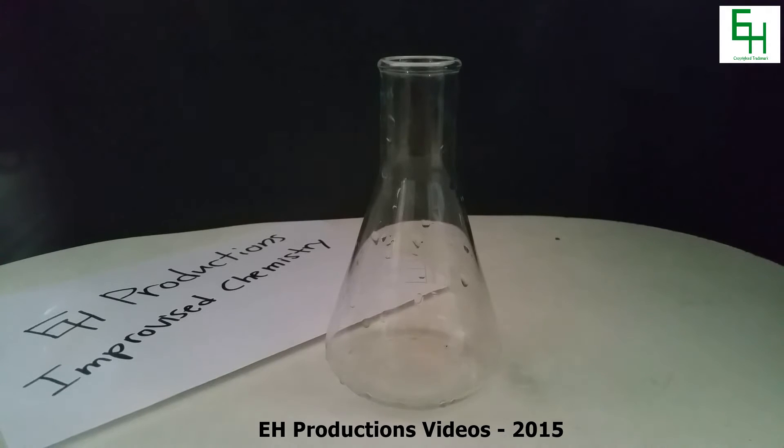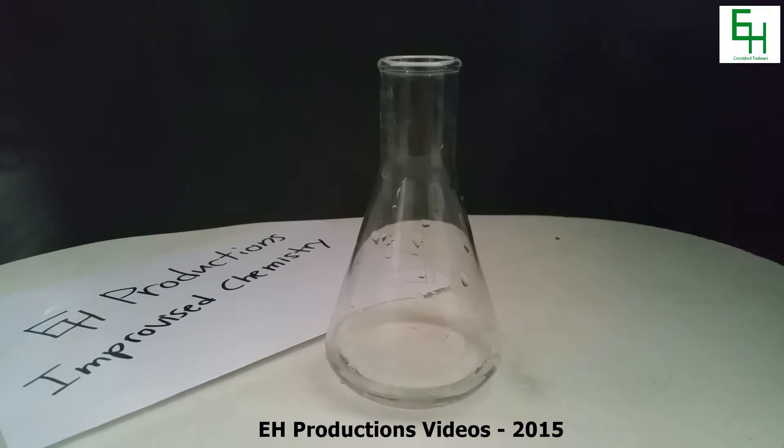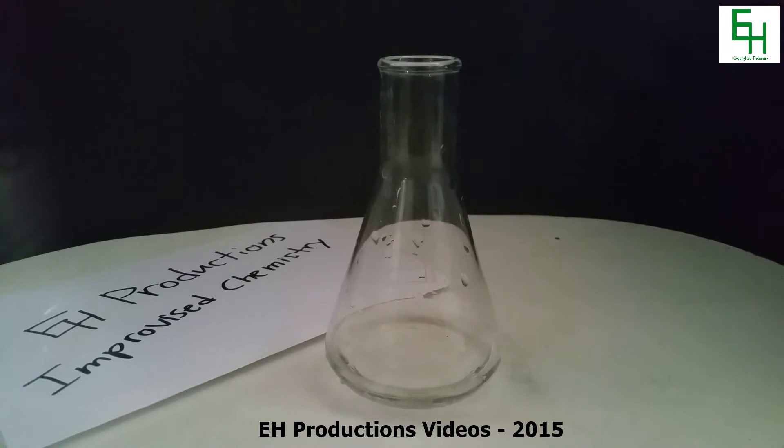So what you're going to do first is get some household hydrogen peroxide, 3%, and just pour some in a flask. You don't need a lot, that should be good. Then what you want to do is add some baking yeast. This will catalyze the reaction to make oxygen.